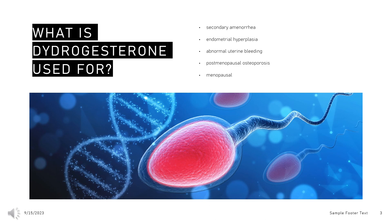What is medroxyprogesterone used for? Medroxyprogesterone acetate (MPA) oral tablets are indicated to treat secondary amenorrhea, reduce the incidence of endometrial hyperplasia in postmenopausal women, and to treat abnormal uterine bleeding due to hormonal imbalance, not organic pathology.